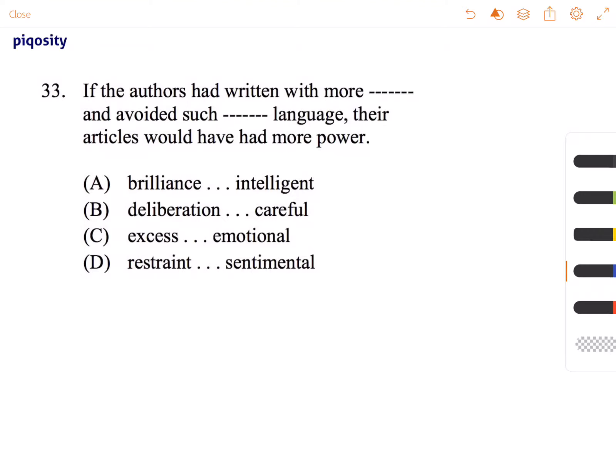So their articles that they've written from before are lacking in power. If the authors had written with more something positive and avoided such negative language, their articles would have had more power. So we're looking for a combination of positive followed by negative words. Let's look at our answer choices.